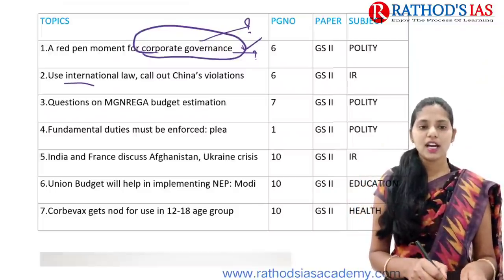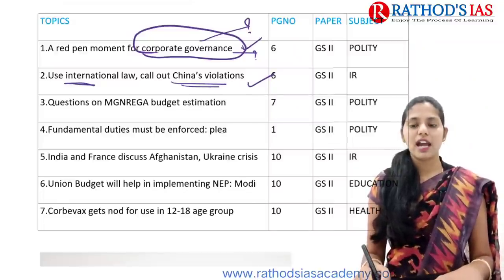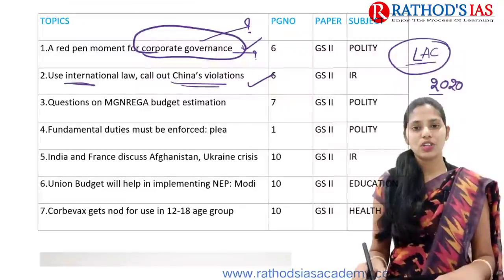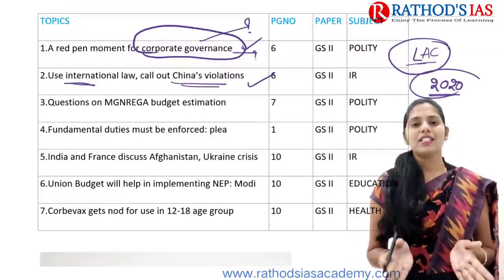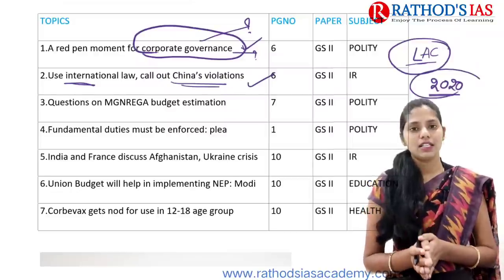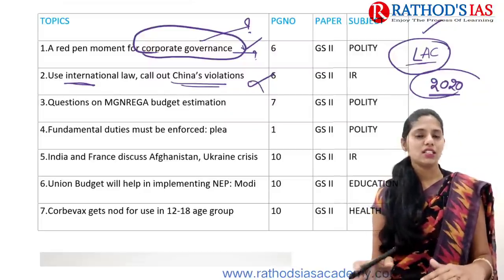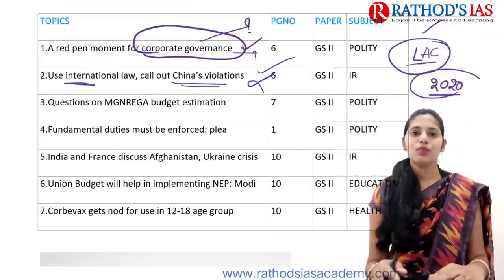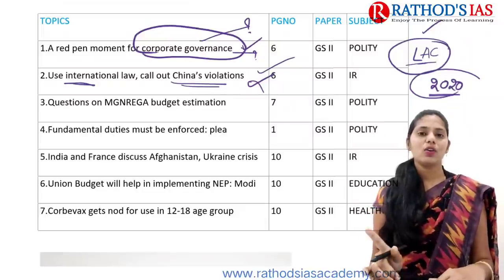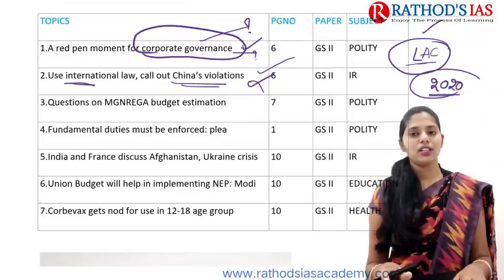The next topic is regarding use of international law to call out China's violations. Already we are seeing a military standoff across the LAC — Line of Actual Control — between India and China, since April-May 2020 onwards. We went for several rounds of talks between India and China, but there is no proper and complete disengagement and status quo at the LAC. This article focuses on the agreements, how China violated them, and how global laws are also violated by China.